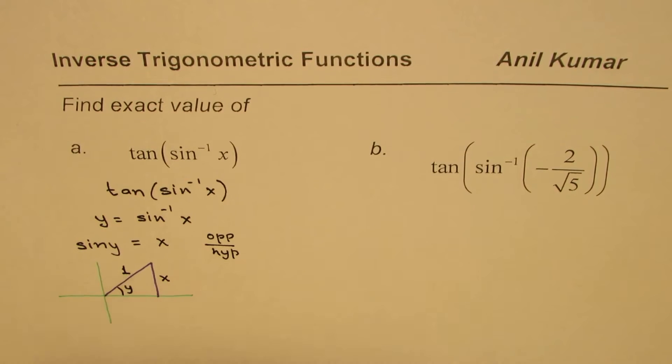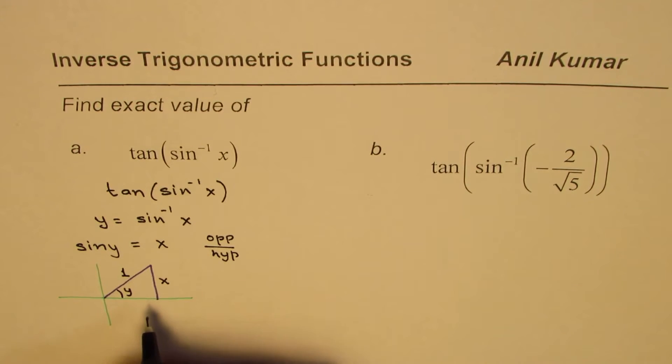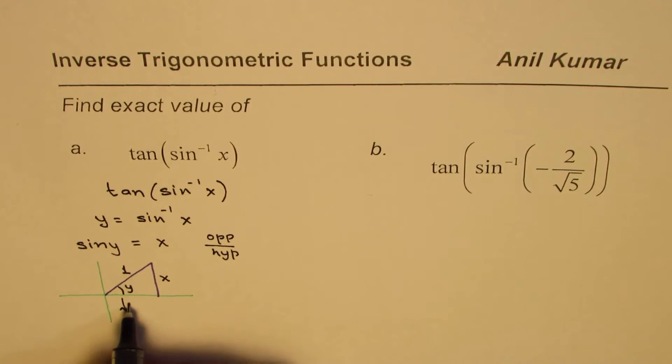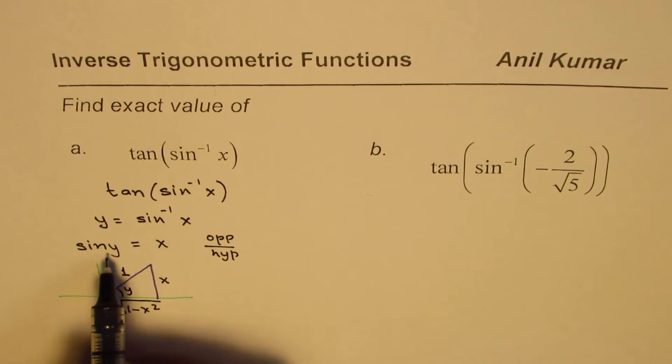So it is basically opposite over hypotenuse, so opposite side should be x and the hypotenuse should be 1. So that is how we could treat this. Now if that is the case, then what is the base equal to? Base, applying the Pythagorean theorem, will be √(1 - x²).